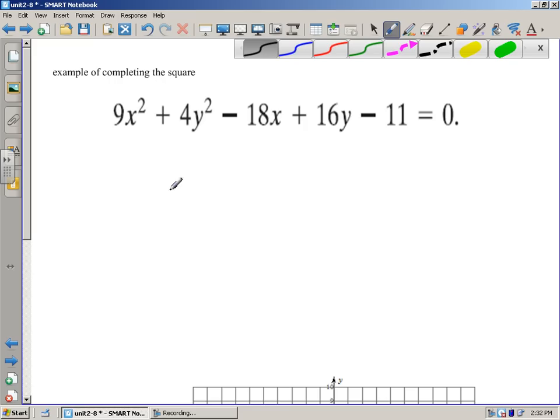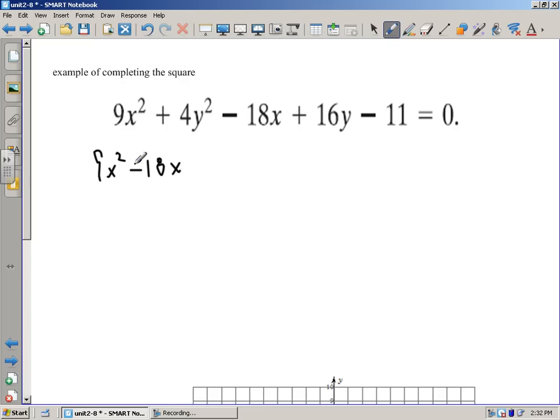So what we're going to do is we're going to group all our x's together. So I'm going to have 9x squared minus 18x. And then I'm going to leave a space and I'm going to group my y's. So that's plus 4y squared plus 16y. And now what I've got to do is I've got to add 11 to both sides. So that's going to give me a positive 11 over here. And this guy's going to go to 0.